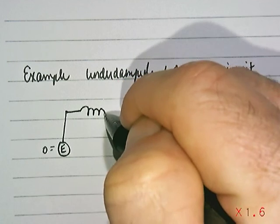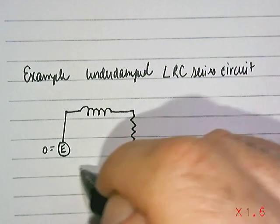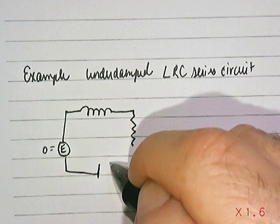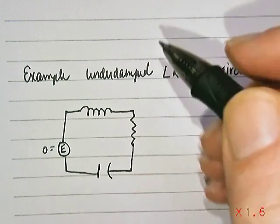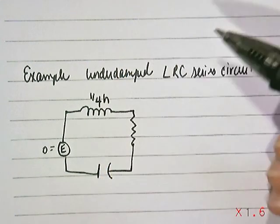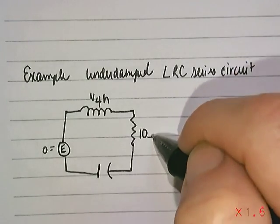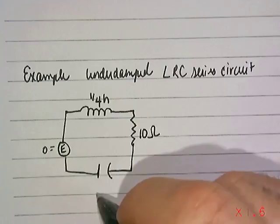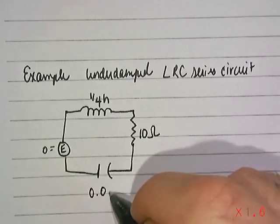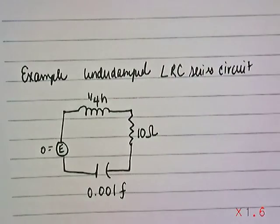We'll just go ahead and say it's equal to zero. Here's our inductance. Here's our resistance. And here's our capacitance. And let's use proper notation here for units. Let's say a quarter Henry on the inductance, 10 ohms on the resistance, and 0.001 farads for capacitance.